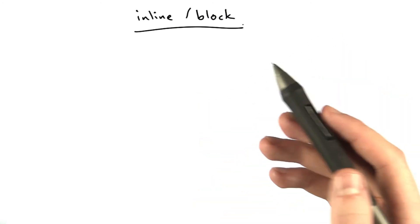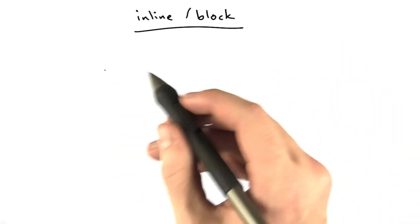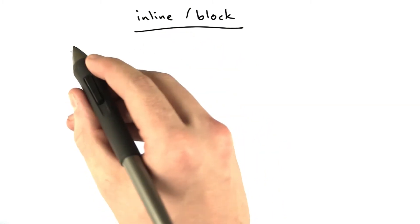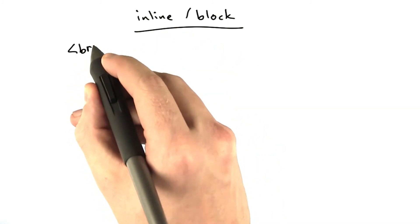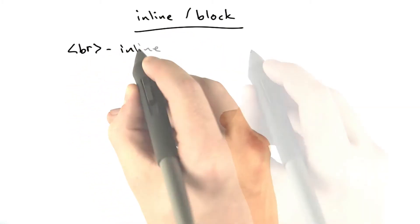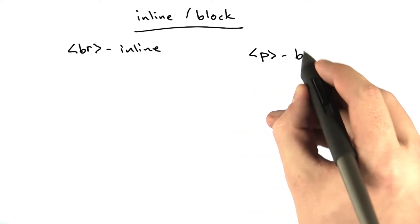Why do we have two different ways of making new lines? Why do we have a br tag and a p tag? The answer is because the br tag is what we call inline, and the p tag is what we call block.